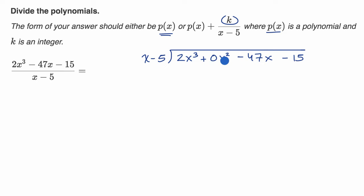And then I have minus 15. By putting that plus 0x squared, that's making sure I'm doing good degree place column hygiene. All right, so now we can work through this.